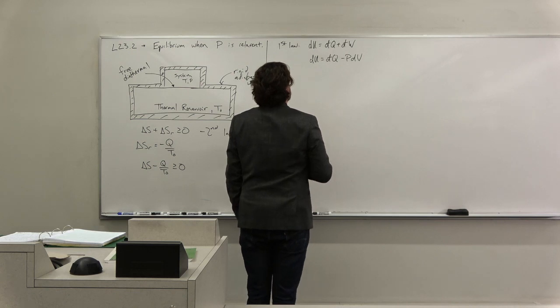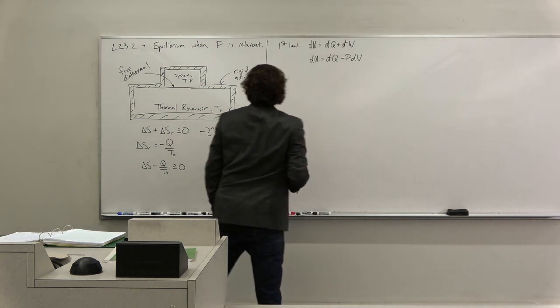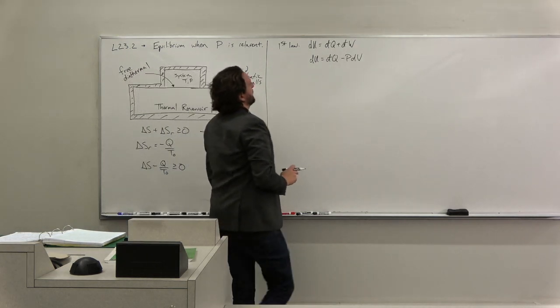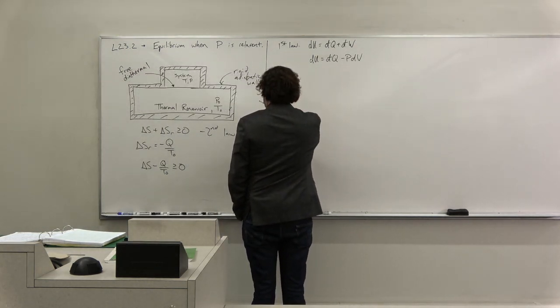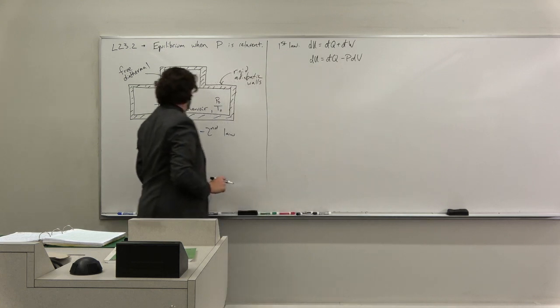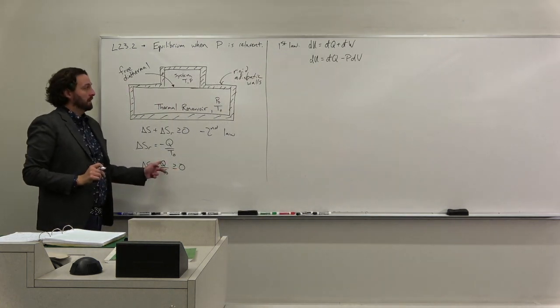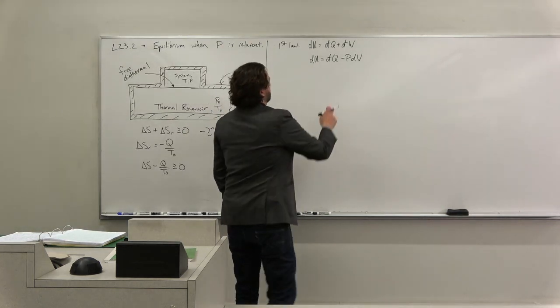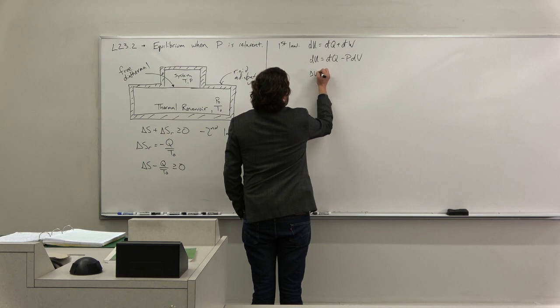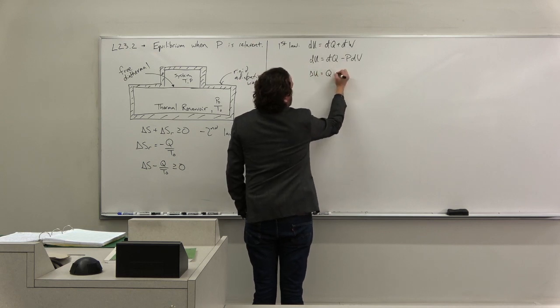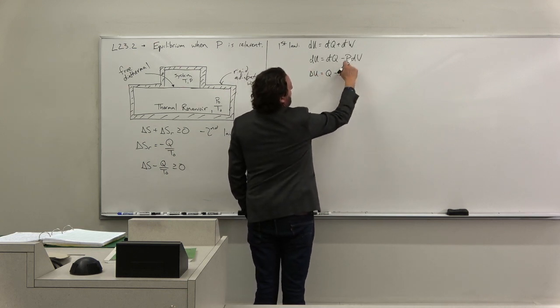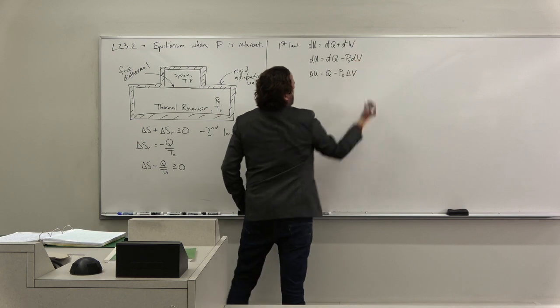My reservoir is going to have a fixed pressure as well. And so for this system, I'm really just doing the reservoir because it has a fixed pressure, it's big, then I can say that delta U is Q minus p0 delta V. I integrated this term, but this one was a constant, p0.